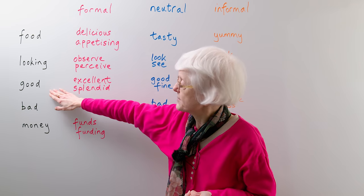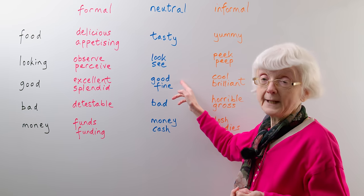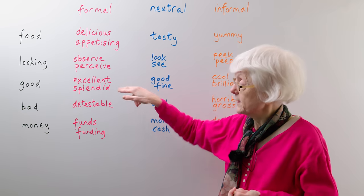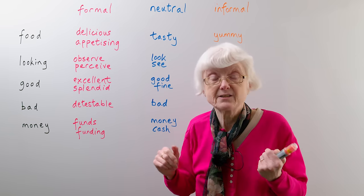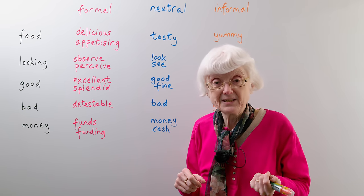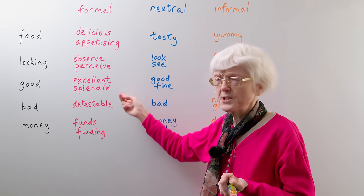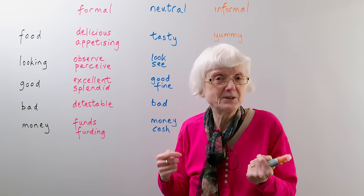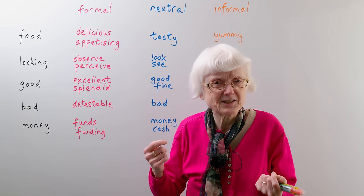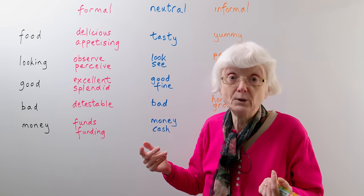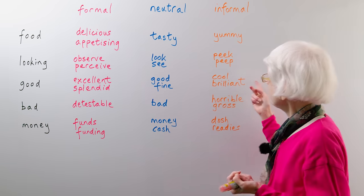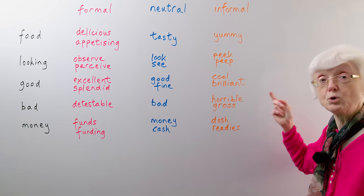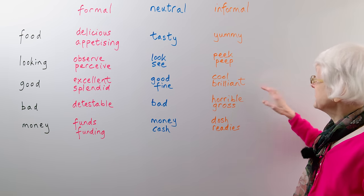If something's good, the neutral words are simply good or fine — very short words. In the more formal way, you might say that's excellent or splendid — longer words. You might also use these to be a bit jokey: 'oh, that's really excellent, I think that's splendid' — it sounds as if you're joking a little bit, putting on an act. Either that or they're just formal ways of saying it. In the more informal way, you would use slang or colloquial words like cool or brilliant.